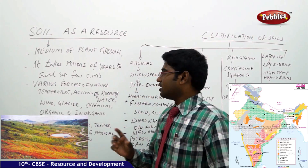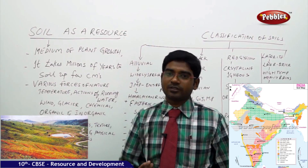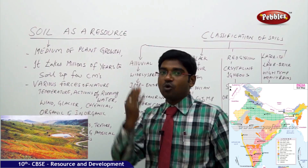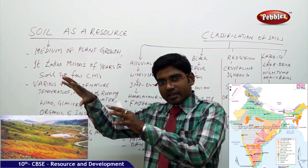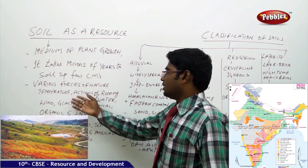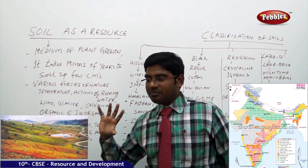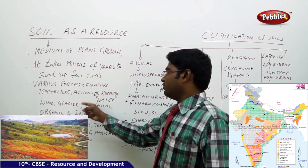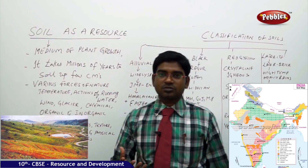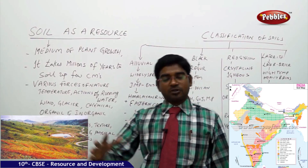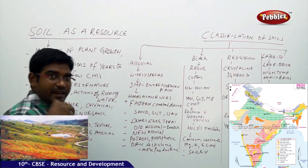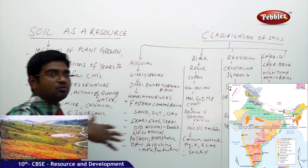There are various forces in nature which help to shape the formation of soils. The various forces are temperature, actions of running water — when water runs it takes the soil along with it and deposits it somewhere else — then wind, which makes the soil fly along with it. We have glaciers, which fall down and take the entire mud. Chemical and inorganic compounds also take the soil. So there are different forces in nature which make soil move from one place to another.